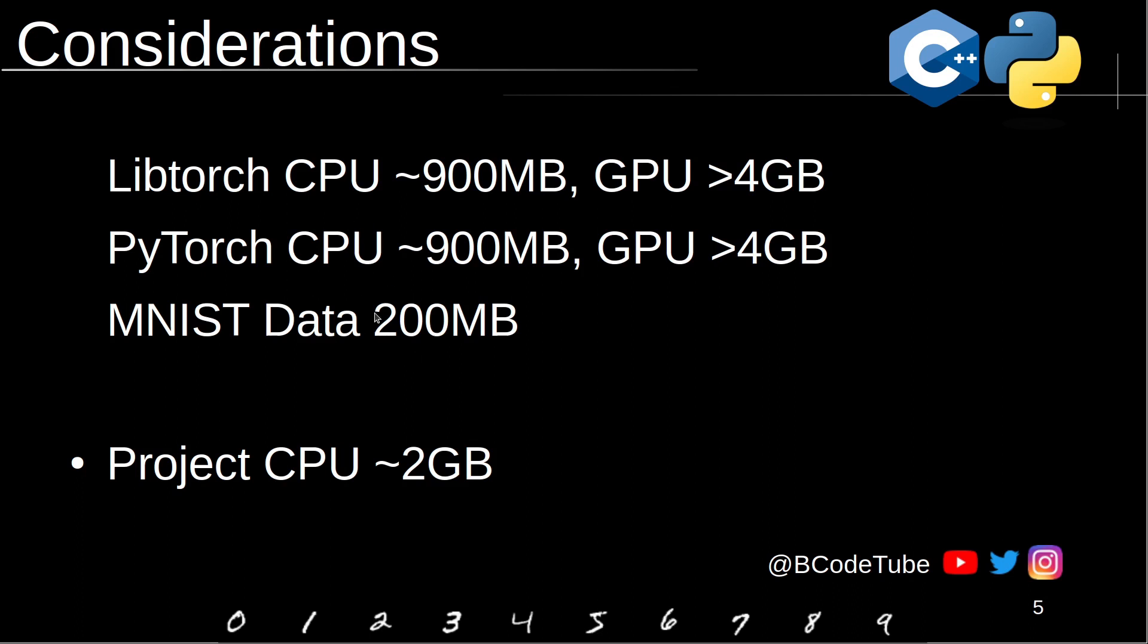If you are following this video, pay attention to your storage, because downloading the LibTorch CPU version is 900MB, but the GPU is more than 4GB. The same for PyTorch. If you get only the CPU, it's 900MB, but if you download the GPU, 4GB. And if you are following both codes, you are going to download more than 8GB, plus the data itself, it's 200MB. So only for the CPU, we are talking about around 2GB. And for the GPU, you can get to 10GB. So just pay attention to your storage.